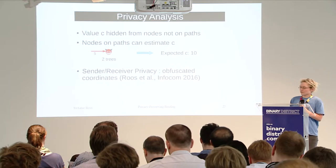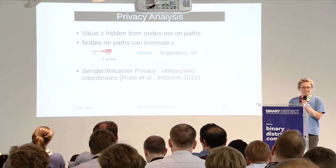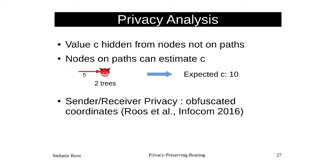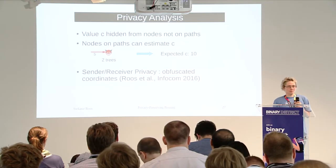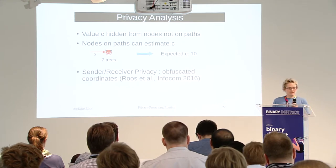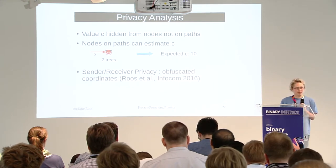For sender and receiver privacy, these coordinates have been used for routing in peer-to-peer networks before, where the same problem of hiding the recipient arose. In the scheme as presented, you need a receiver address that identifies the recipient. There is a way to hide it and still do the routing, but it's complicated — it's work from another paper, so it won't be presented here, but you're welcome to ask or look it up.